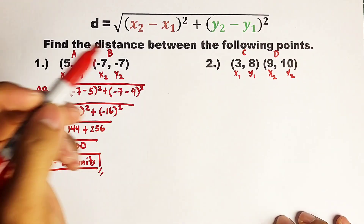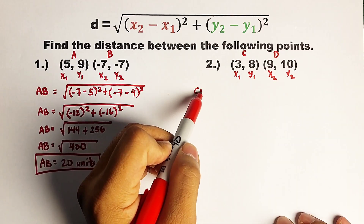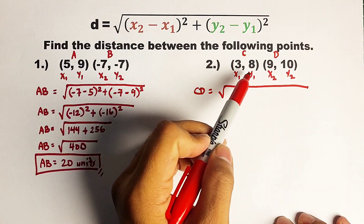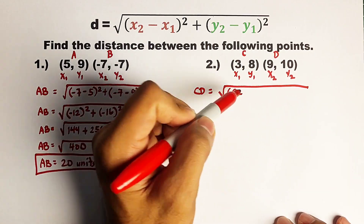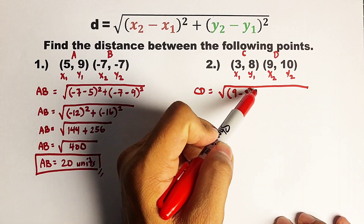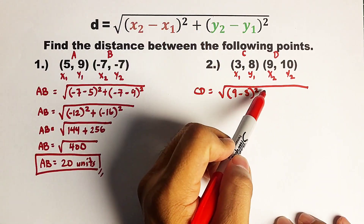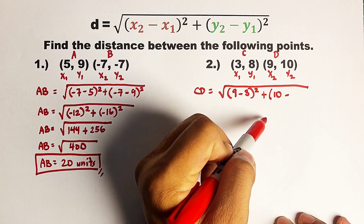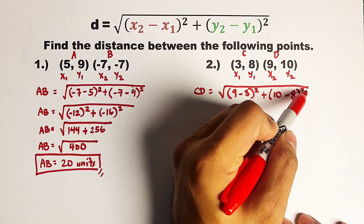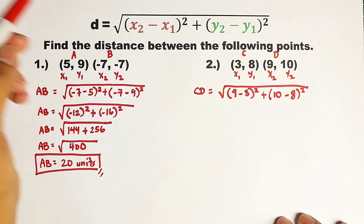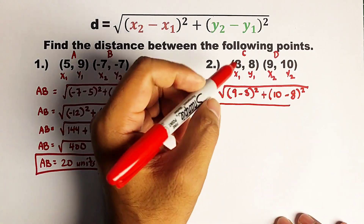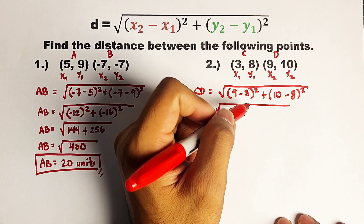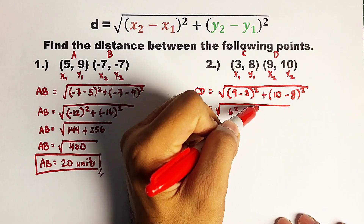Let's continue to find the distance between point C and D. That is equal to the square root of: x sub 2 is 9, minus x sub 1 which is 3, raised to the second power. Plus the quantity of y sub 2, which is 10, minus y sub 1, which is 8, raised to the second power. So continuing: the square root of 9 minus 3, which equals 6, squared, plus 10 minus 8, which equals 2, squared.